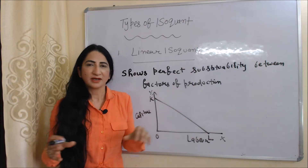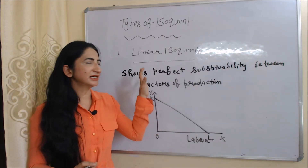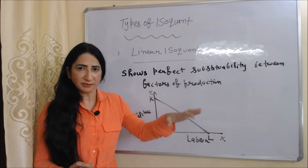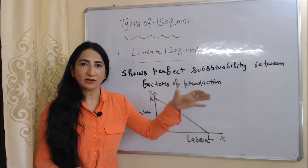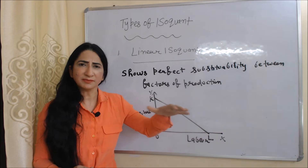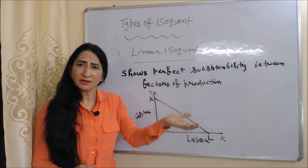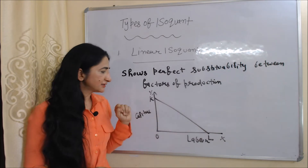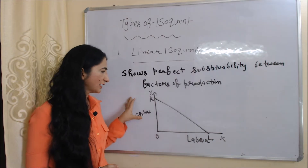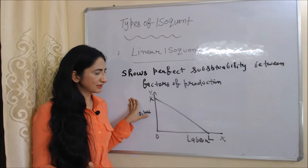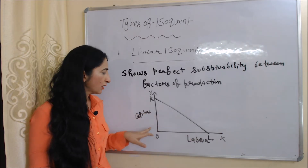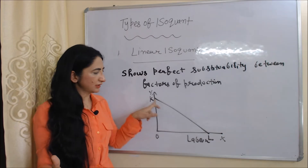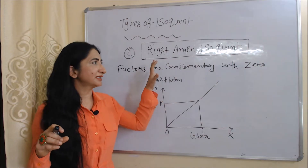Now we are going to talk about types of isoquant. The first type is the linear isoquant. A linear isoquant shows perfect substitutability between factors of production — factors are completely substitutable with each other. We can completely use labor instead of capital or capital instead of labor. In the diagram, we can produce using either OL amount of labor or OK amount of capital. A linear isoquant is also called a straight-line isoquant.